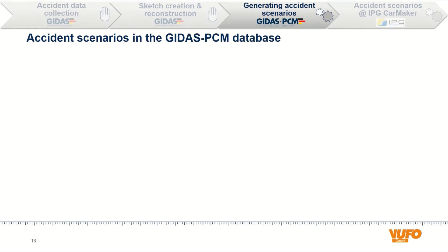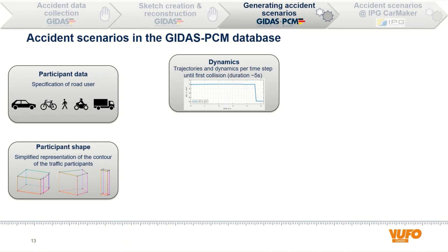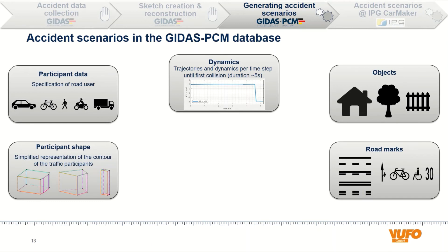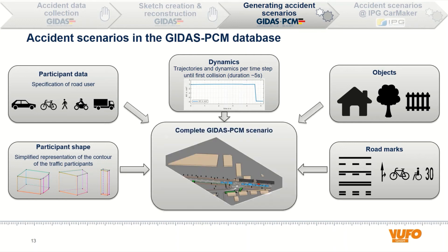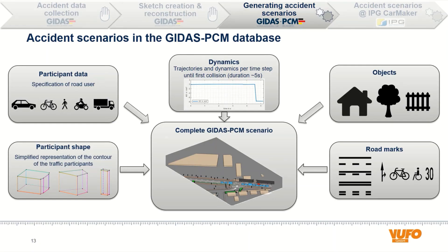But what data is stored in the GEDAS PCM? It contains tables with information on the accident participant and their shapes. The dynamics of each participant with trajectories, velocities, etc., is stored until the first collision. And we have the environment with objects and road marks to get an understanding of the surrounding. For our example scenario, the content of the GEDAS PCM looks like this if we visualize it. You see the accident sketch with all relevant information and the movement of the involved vehicles along the trajectories of the accident reconstruction until collision. The GEDAS PCM currently contains more than 10,000 real accident scenarios.